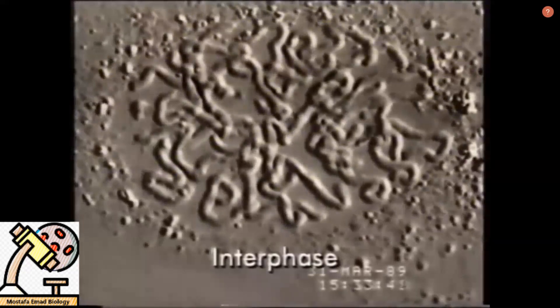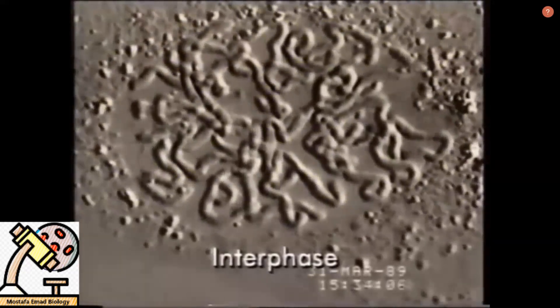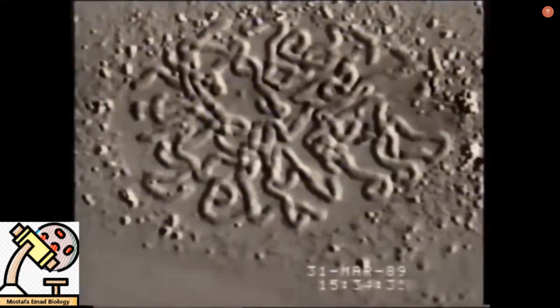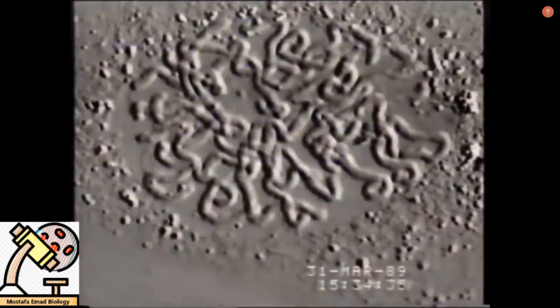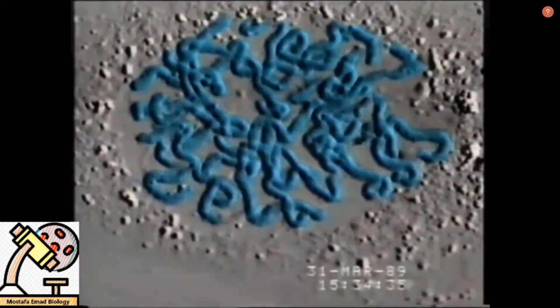The cell cycle begins with interphase, a waiting period that precedes mitosis. In the nucleus, we see the tangle of chromosomes, called chromatin. The chromatin is composed of protein and DNA.